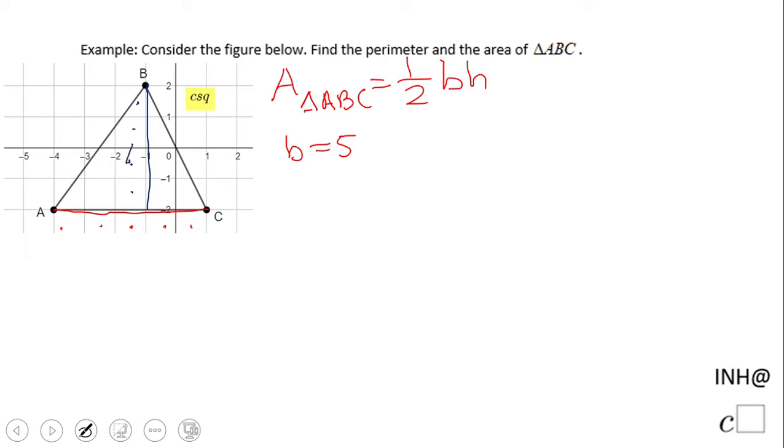Now what about the height? The height, again, we have an easy one. This right: 1, 2, 3, 4. Okay, the height is 4. So we're kind of finished. The area would be one-half times 5 times 4, that would be 10, right? 10 square units. Be sure.